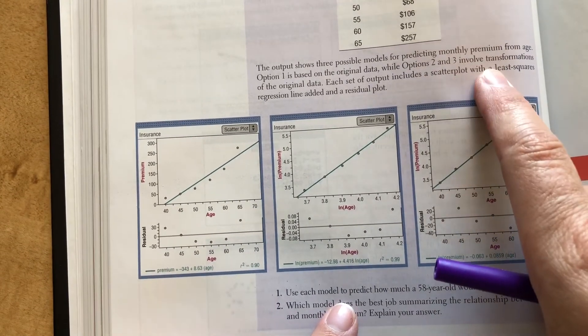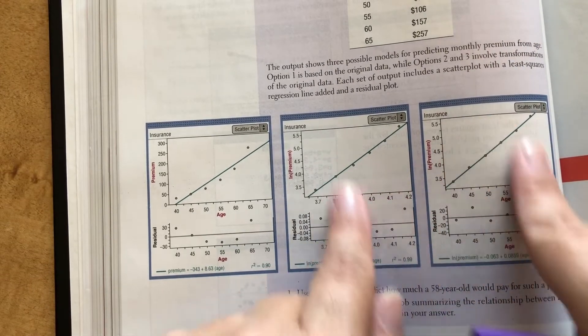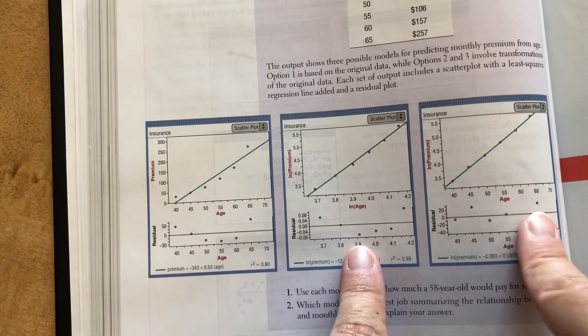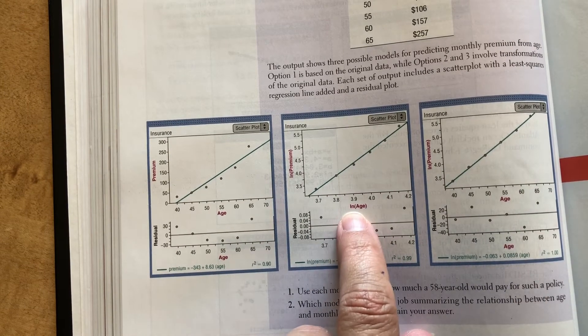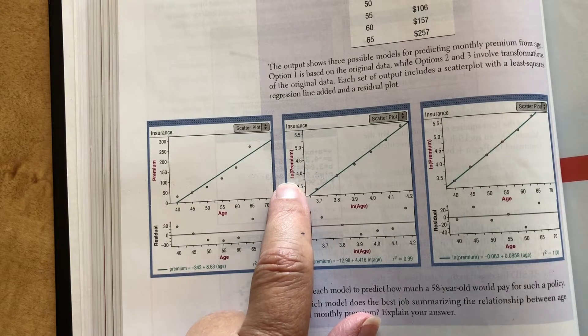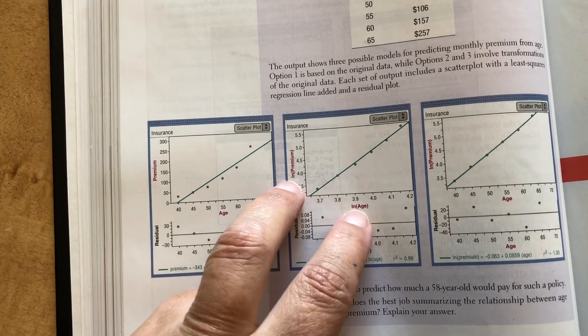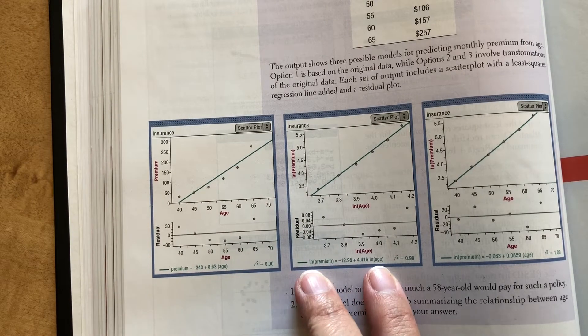Option two and three involve transformations of the original data. So we transform the data, the original data, in these two scenarios. For this one, we took the natural log of the age versus the natural log of the premium. So we natural log both of them. So every time we see predicted premium and age in the equation, we have to take the natural log.